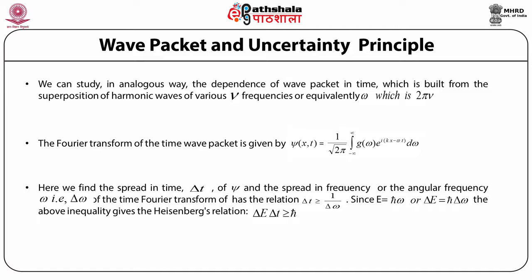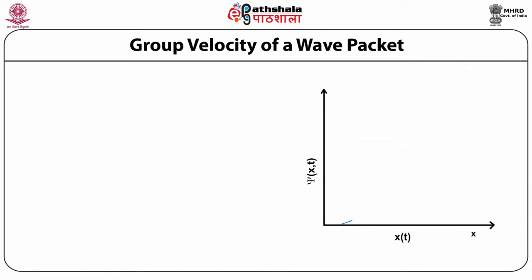The energy associated with the wave packet having angular frequency omega is given by E = h_bar · omega. Thus, if delta omega is the spread in angular frequency, then the corresponding spread in energy is delta E = h_bar · delta omega. Combining delta t ≥ 1/delta_omega with delta E = h_bar · delta_omega gives the second form of Heisenberg's uncertainty relation: delta E · delta t ≥ h_bar.